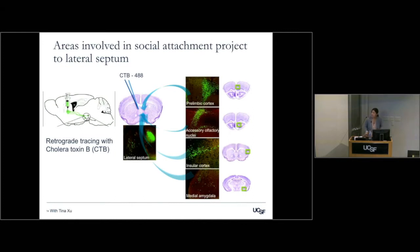When we inject into the lateral septum — a region that came up robustly and differentially activated in our assays — we find several regions throughout the brain where neurons project directly to the lateral septum. One of these is the prelimbic cortex, which we had already identified as differentially activated. We also see regions involved in processing sensory information and social stimuli — areas like insular cortex and medial amygdala — starting to give us a map for the brain regions processing social attachments.